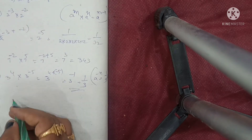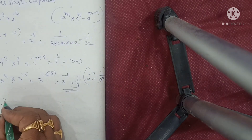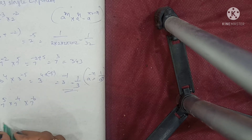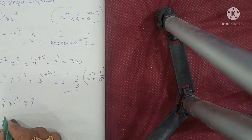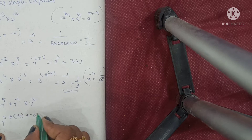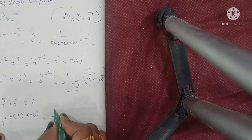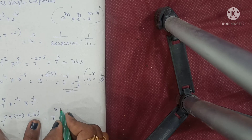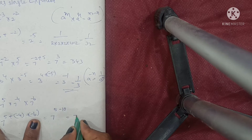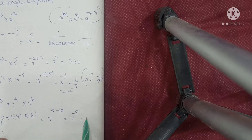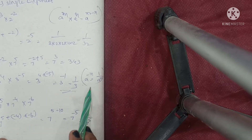Next, fourth one: 7 power of 5 into 7 power of minus 4 into 7 power of minus 6. It means 7 power of 5 plus minus 4 plus minus 6. That gives 7 power of 5 minus 10, which is 7 power of minus 5. Converting using the formula, it means 1 by 7 power of 5.